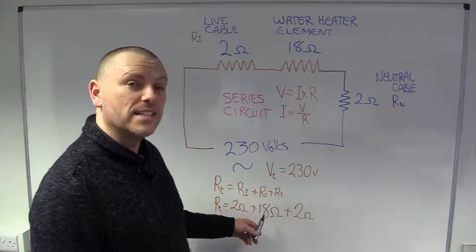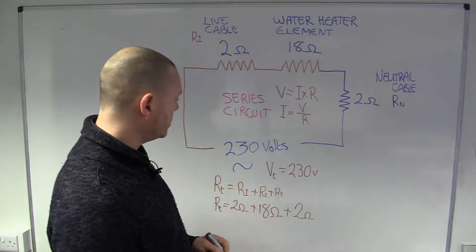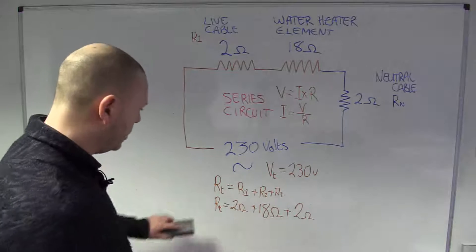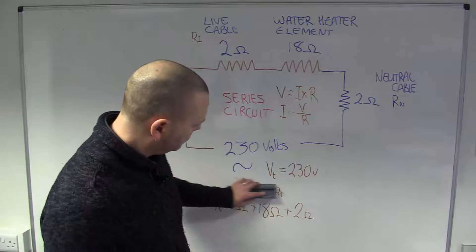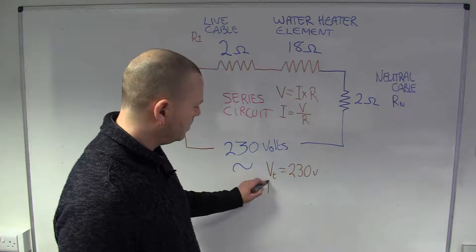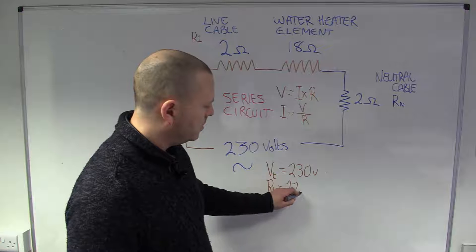So, 2 plus 18 is 20, plus 2. So, we've got a total resistance in our circuit of 22 ohms. So, now we can put that in. Our total 22 ohms.